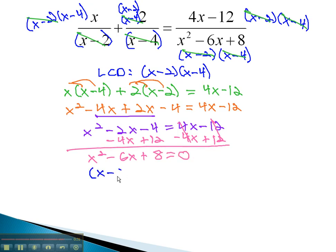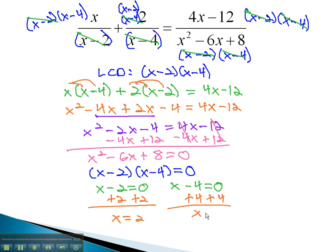This equation does factor to x minus 2 times x minus 4. Setting each factor equal to 0, we can quickly solve by adding 2 to get x equals 2, and adding 4 to get x equals 4.